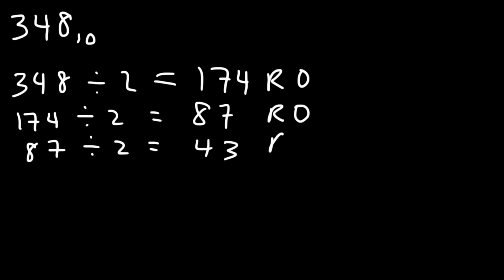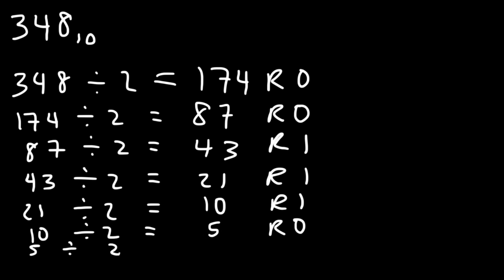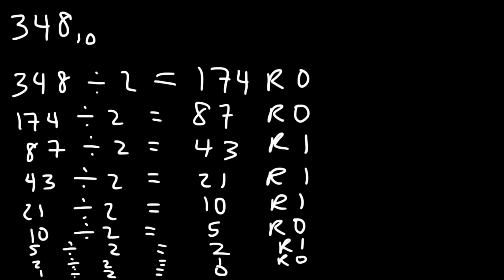Continuing: 43 divided by two is 21.5, which is 21 remainder one. Then 21 divided by two is 10.5, so 10 remainder one. Then 10 divided by two is exactly five, remainder zero. Five divided by two is 2.5, so two remainder one. Two divided by two is exactly one, remainder zero. Finally, one divided by two is 0.5, so zero remainder one.